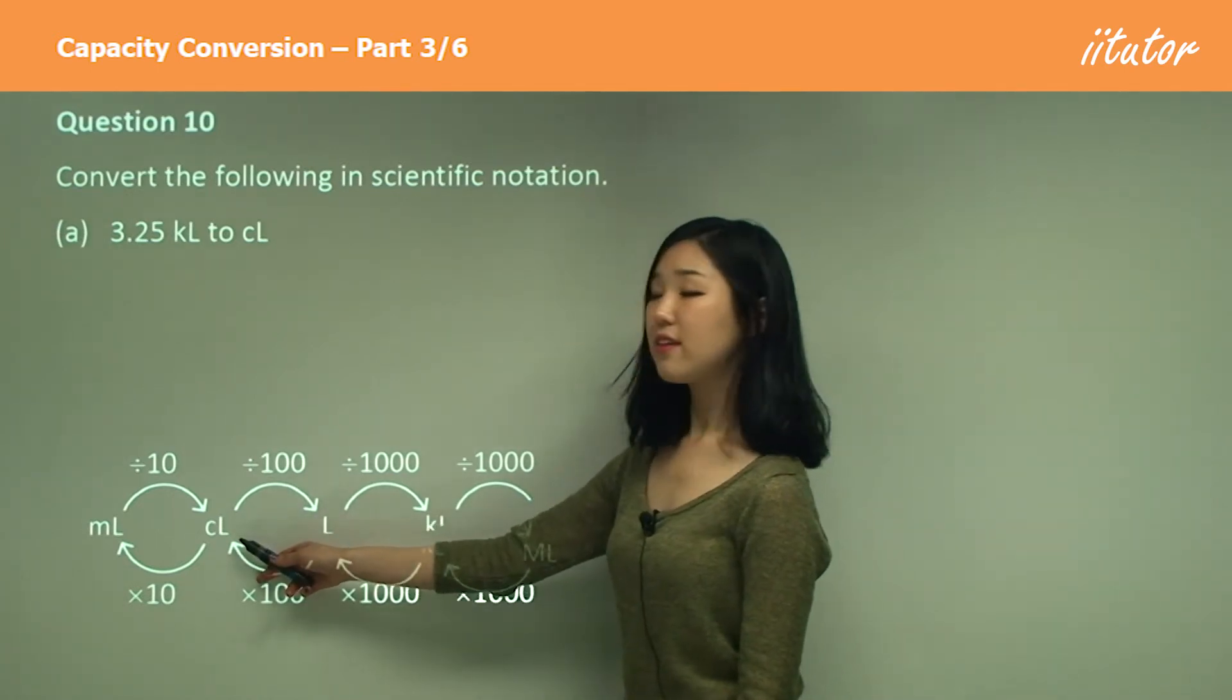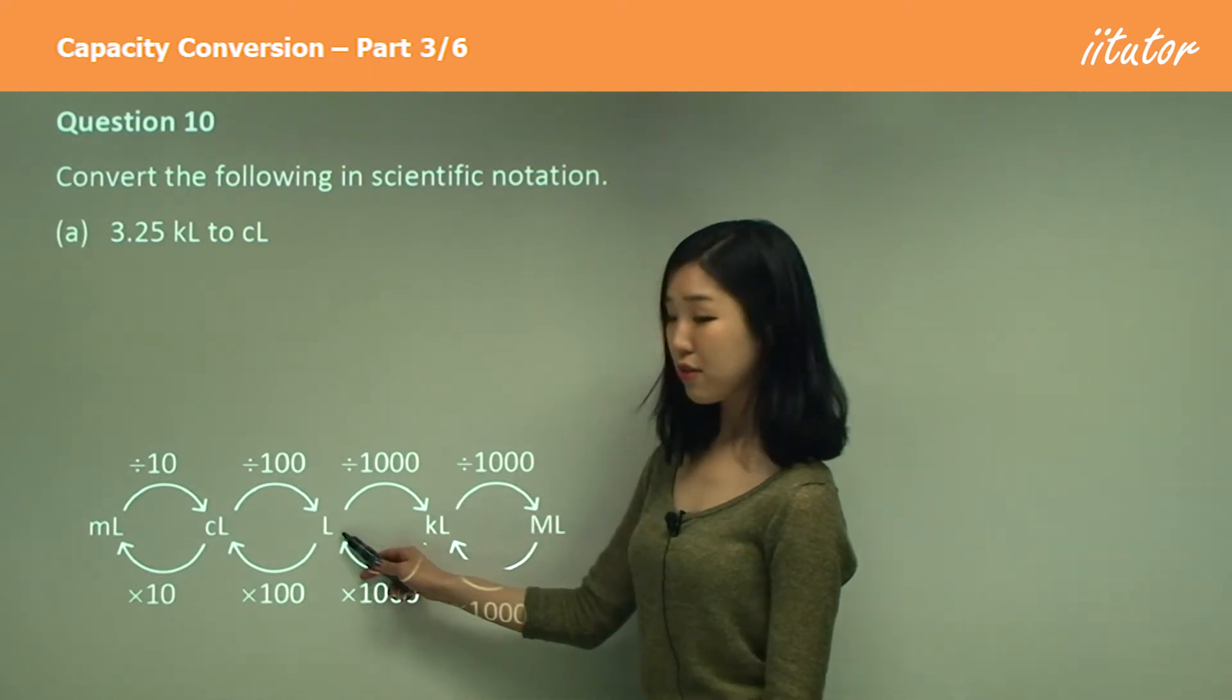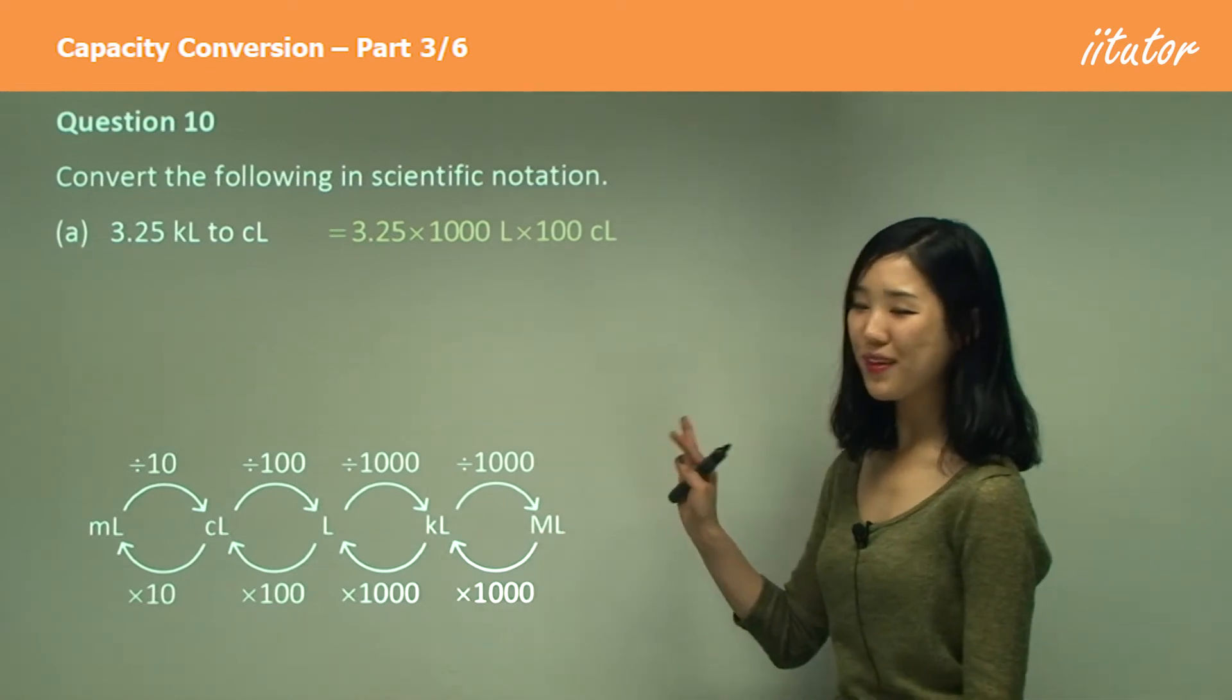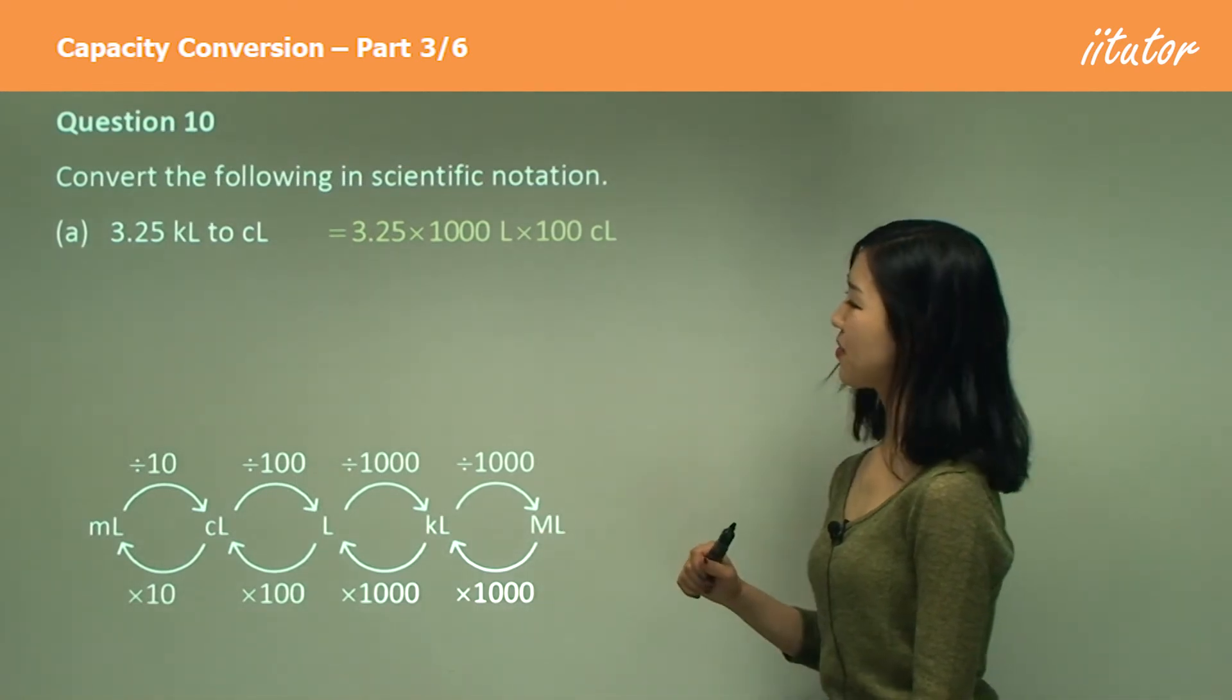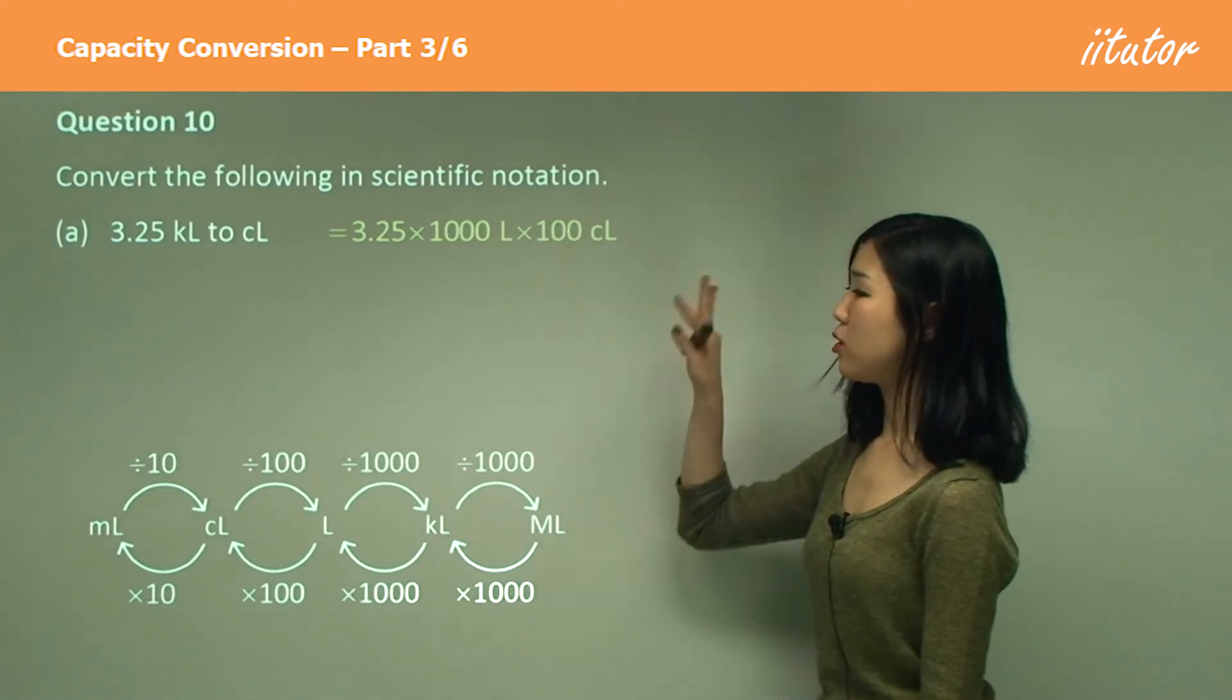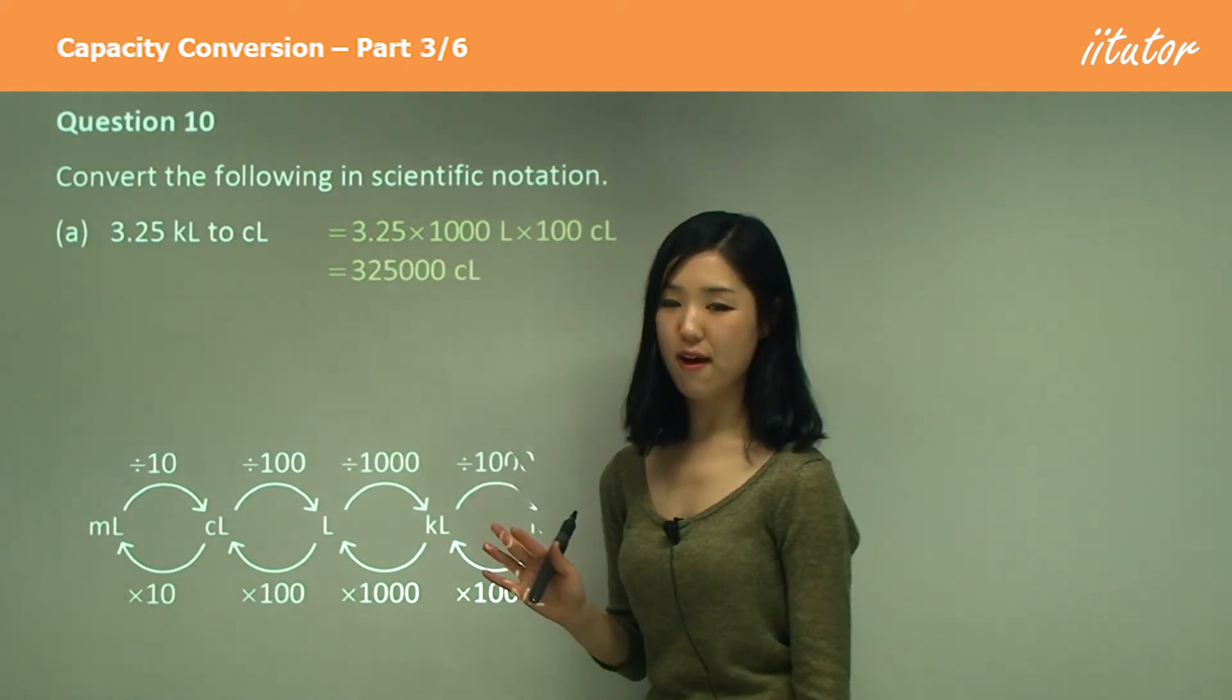So kiloliters to centiliters, large to small, we multiply. But we must multiply by a thousand first, and then a hundred. So divide, oh sorry, multiply by a thousand, and then add a hundred again, okay? So we have one, two, three, four, five zeros that we're going to move to the right. So it's going to have three extra zeros after five, like that.